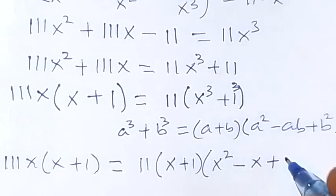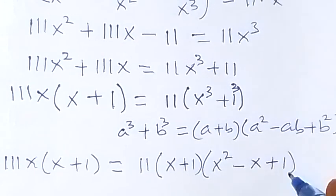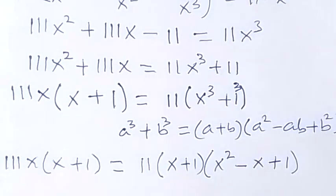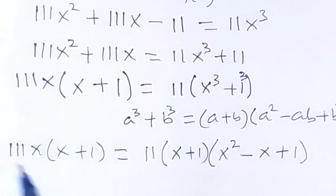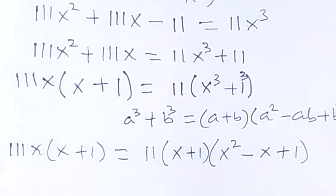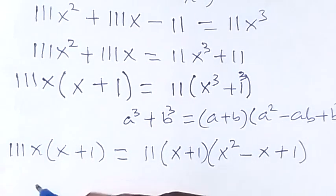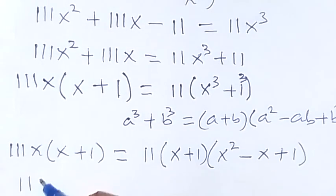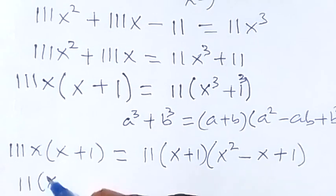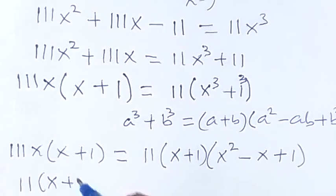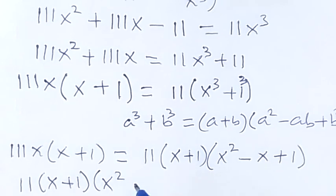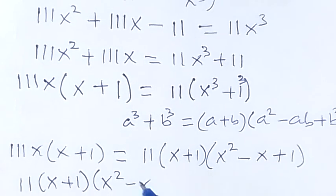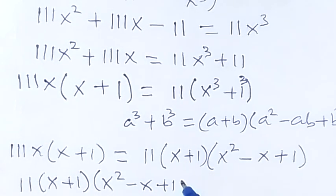From here, let's take everything to the right. We have 11(x + 1)(x² − x + 1) on the right-hand side.